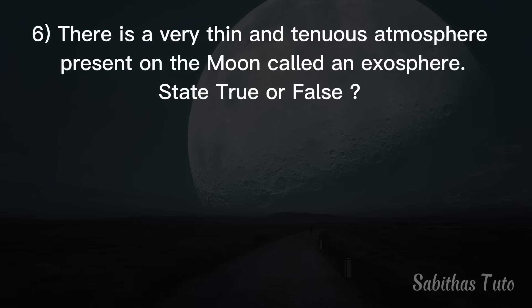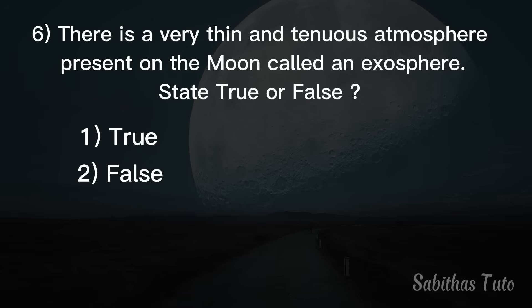Sixth question. There is a very thin and tenuous atmosphere present on the moon called an exosphere — state true or false? The answer is true.